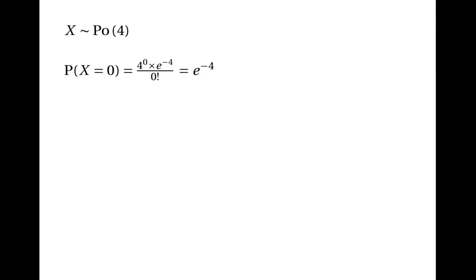We can work out the probabilities. The probability of having 0 events is 4 to the power of 0 times e to the power of minus 4 divided by 0 factorial, which is e to the power of minus 4, because 4 to the power of 0 and 0 factorial are both 1. The probability of having 1 event is 4 to the power of 1 times e to the power of minus 4 divided by 1 factorial, which is 4 times e to the power of minus 4.